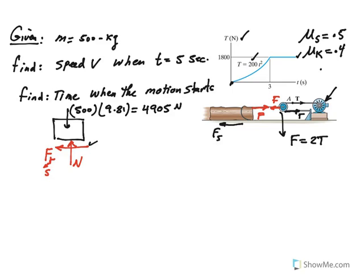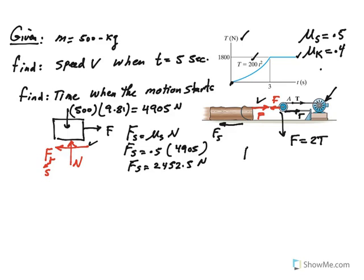If you go ahead and find the static friction, fs equals mu_s times N, so that's 0.5 times 4905, which is 2452.5 newtons. This f must be equal to friction, so at least you need that much tension. Remember that f is 2T, so basically if you set 2T equal to the friction force, which is 2452.5...